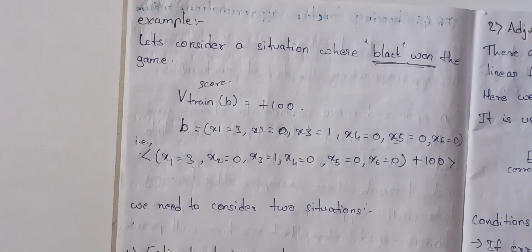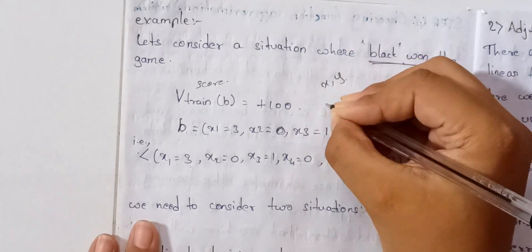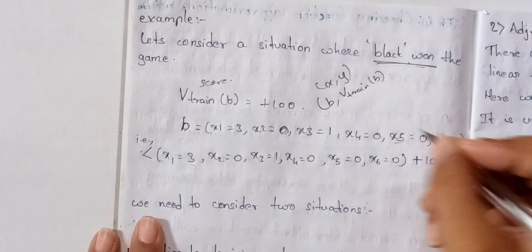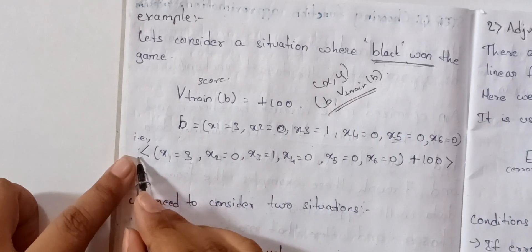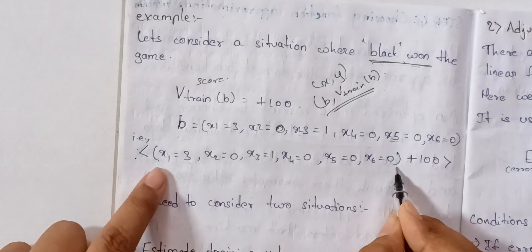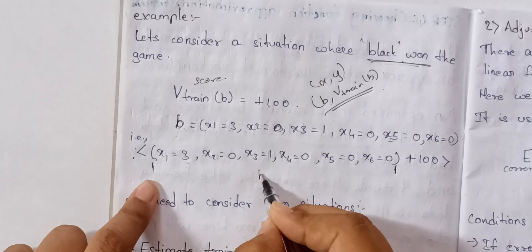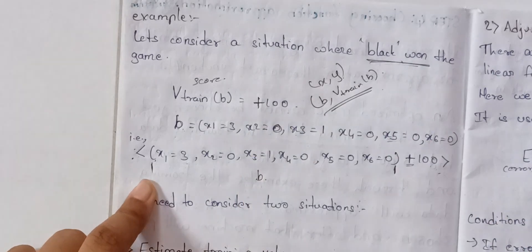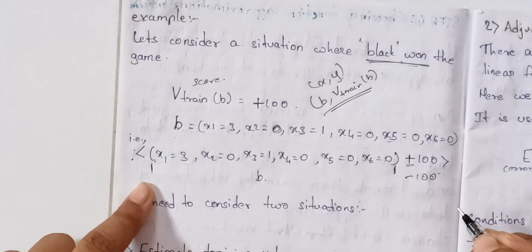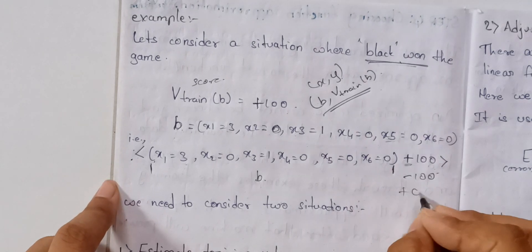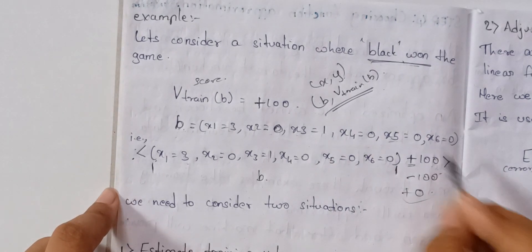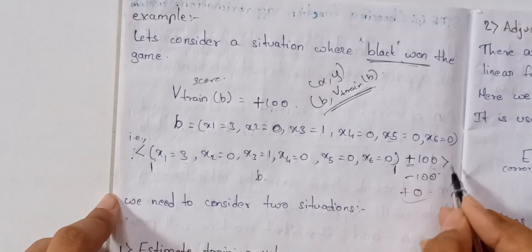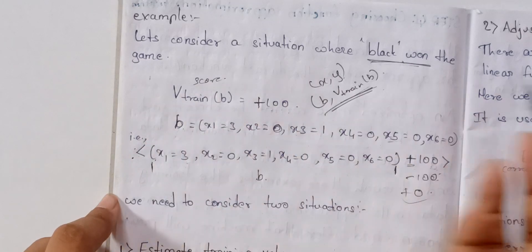The training example is in the form of x, y — that is, b and v_train(b). Here b is the board state and the value is plus 100. Why is it plus 100? One way to win the board is plus 100, minus 100 for a loss, and 0 for a draw. So v_train(b) is a board score value. This is the form of v_train(b) — the board score — so it is plus 100 for a win, minus 100 for a loss, and 0 for a draw.